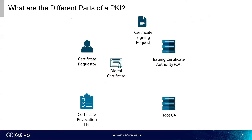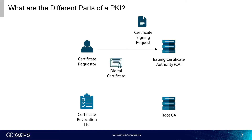To begin the process of getting a certificate, a certificate requester will send out a certificate signing request to the issuing CA. A CSR contains all the information needed to create a certificate. This request also contains the public key of the user, which is extremely important. As for the encryption process, users will create a mathematically linked key pair.